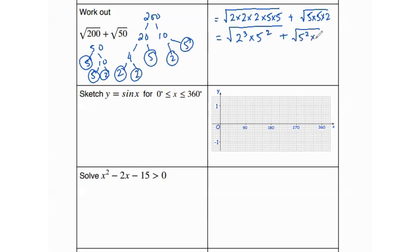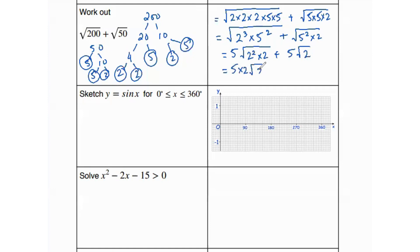We can write 200 as 2³ times 5², and 50 as 5² times 2. Since √25 equals 5, the 5 comes outside the square root. We rewrite 2³ as 2² times 2; since √4 equals 2, that 2 comes outside as well. So √200 gives 10√2, and √50 gives 5√2, which adds up to 15√2. That is the answer.